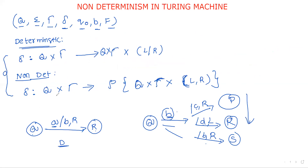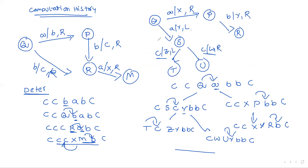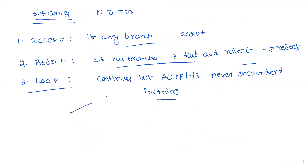To summarize: we covered the difference between deterministic and non-deterministic Turing machines in terms of the delta representation, how to represent a particular moment of a Turing machine in string format as a configuration, the computation history for both types, and the three possible outputs. In the next session we will prove that non-deterministic and deterministic Turing machines have the same computational power. Thank you.